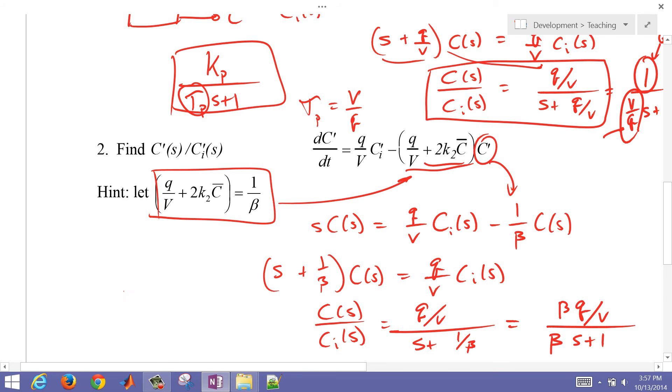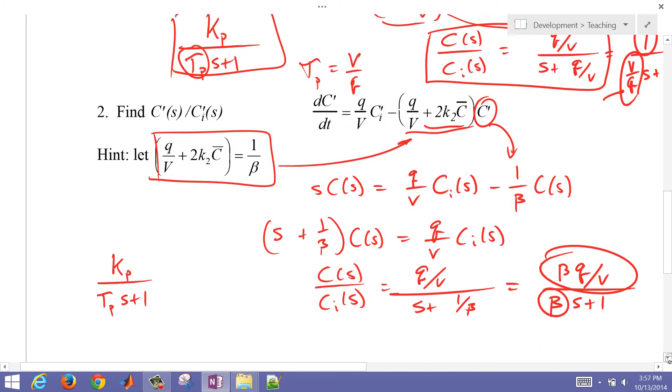So in this case, my gain, Kp over tau_P S plus 1, my Kp is going to be this numerator term, and my time constant is going to be the beta.